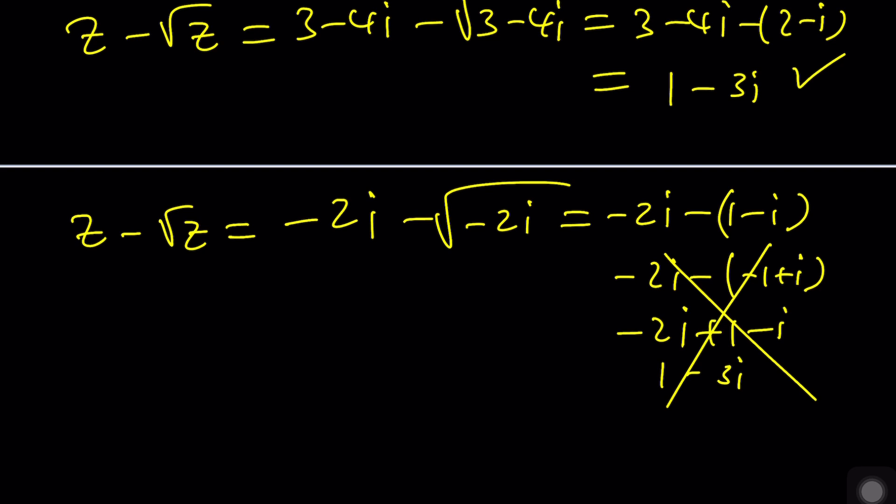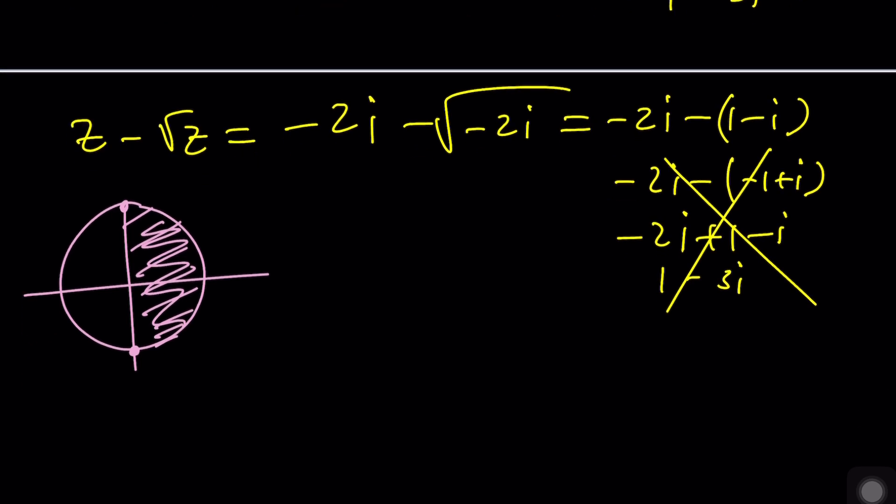It needs to be in this semi-circle on the coordinate plane. So when we use this we get negative two i minus one plus i which is negative one minus i. That's not a solution. That's not a valid solution because it doesn't satisfy the original equation. And this has to do with principal square root and also you're doing a radical equation. Radical equations may have extraneous solutions. Negative two i did not work. So we got one solution which is z equals three minus four i.